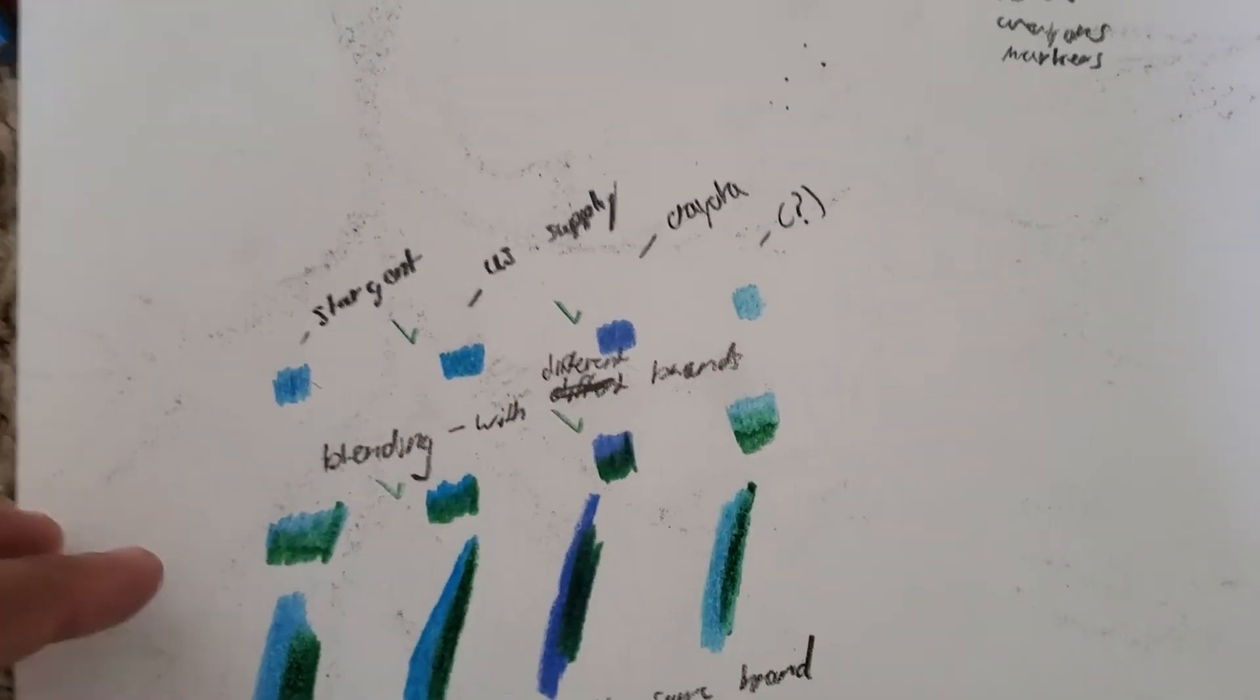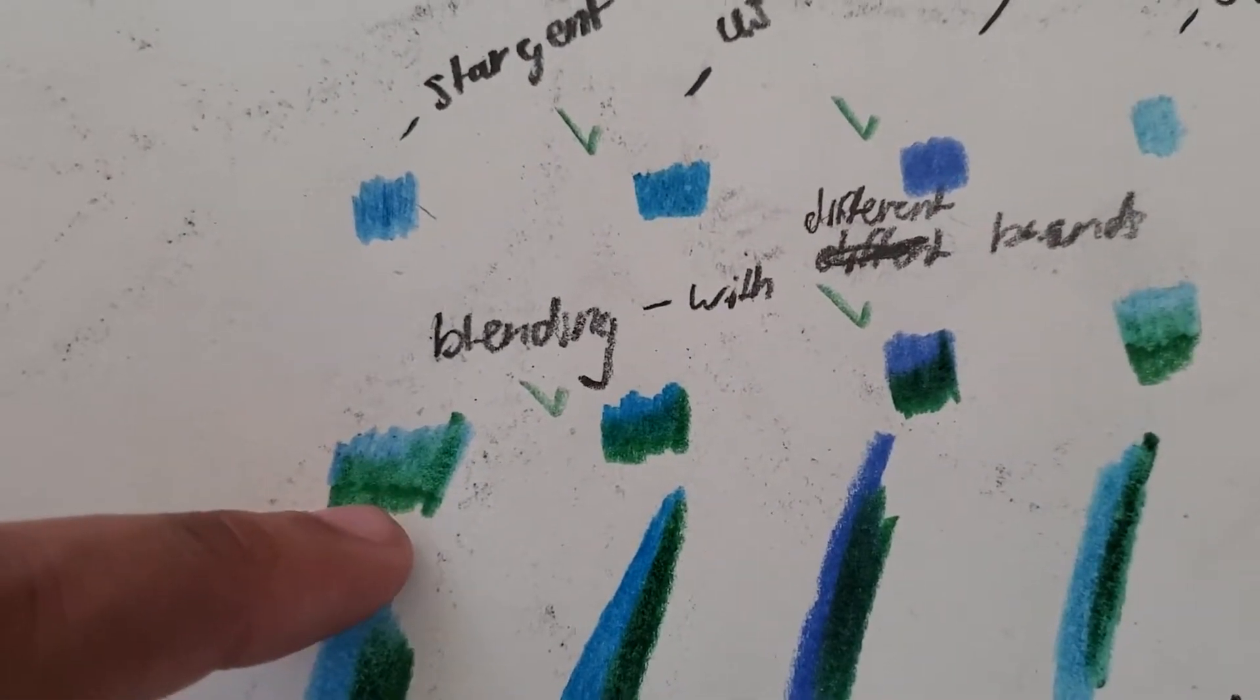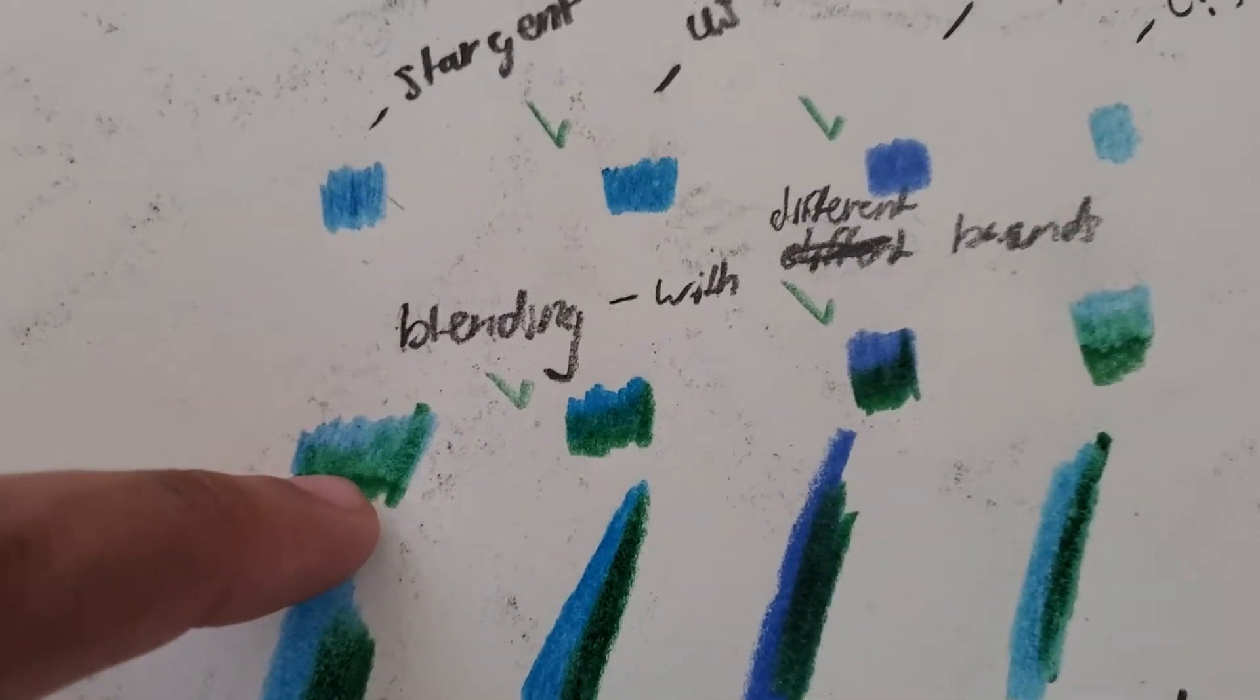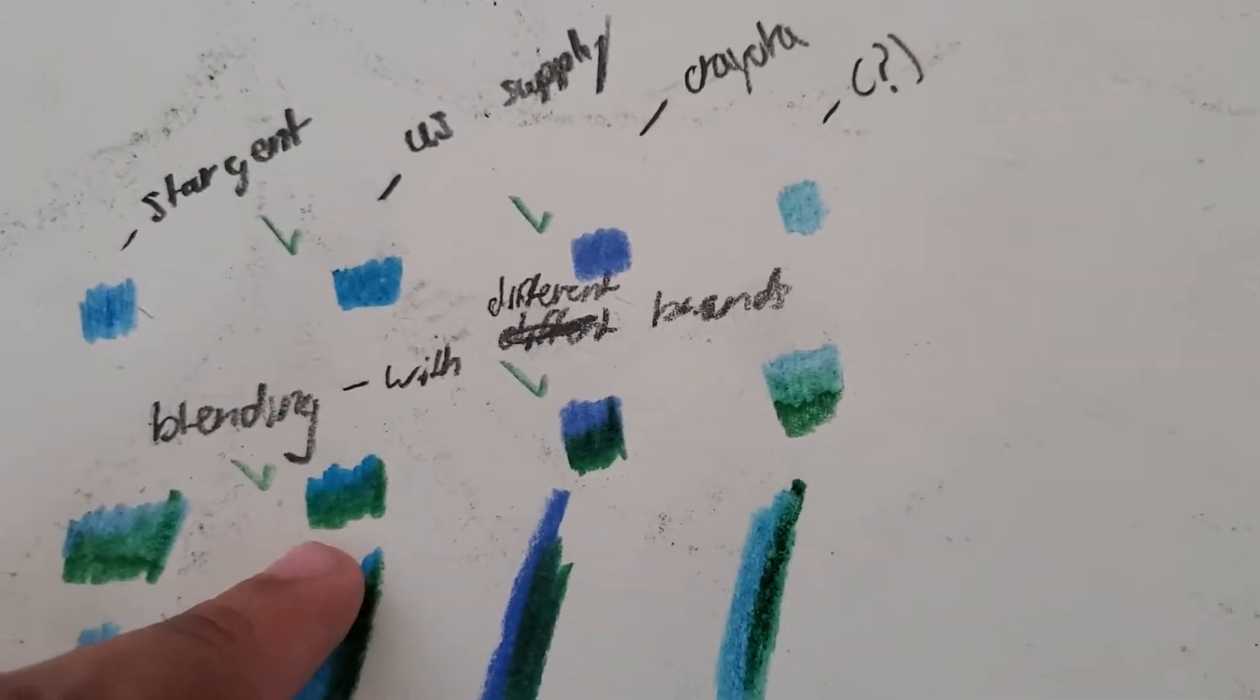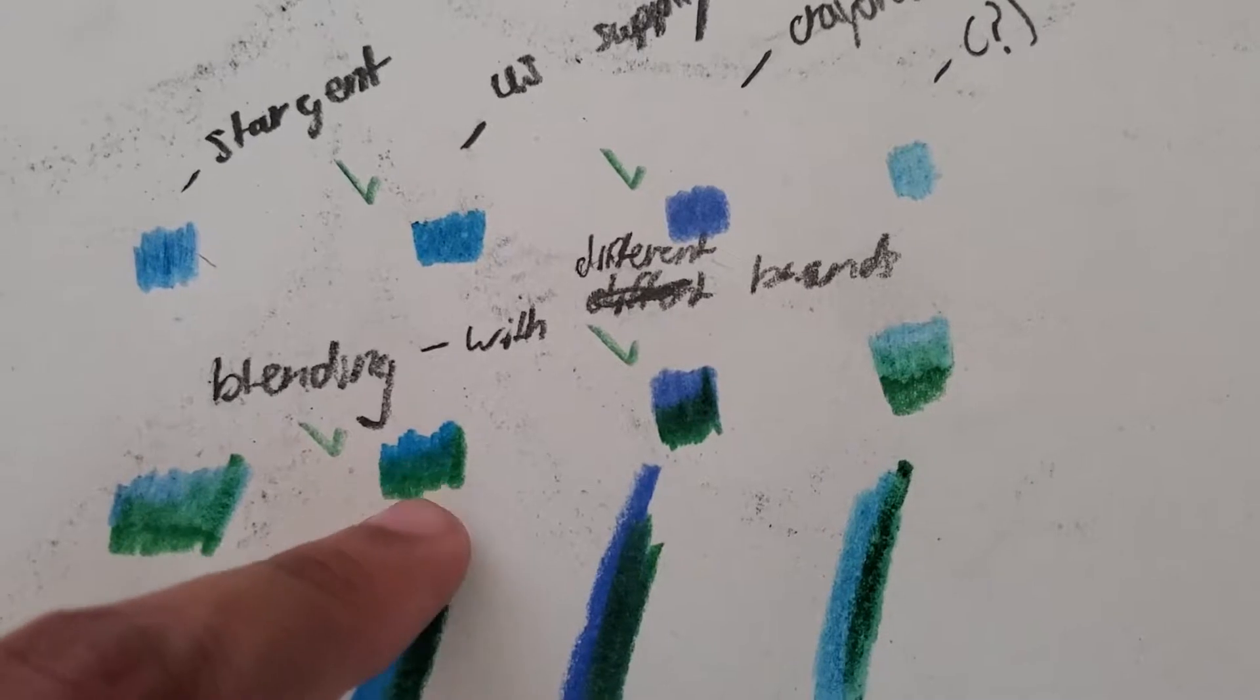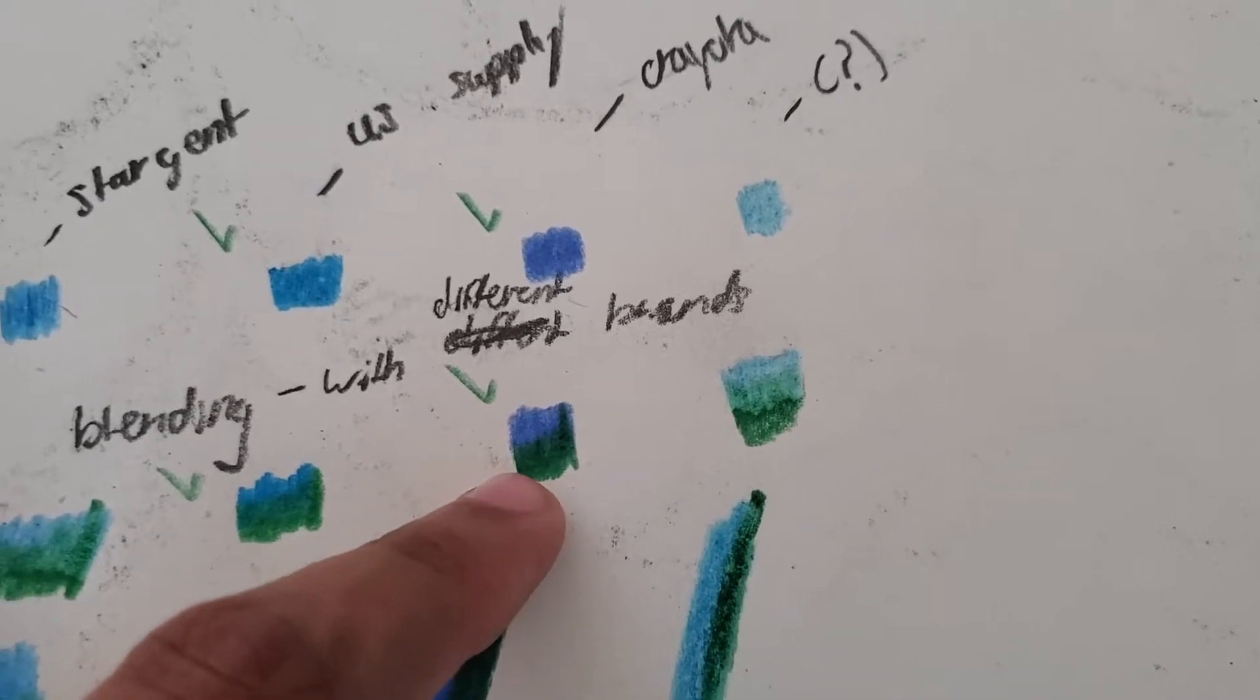This is what they look like blended with green Crayola. Notice how this one, all the color kind of sticks here and it kind of gets dull. Then USA art supply, it kind of sticks together better than the Stargate.